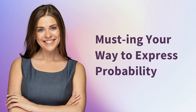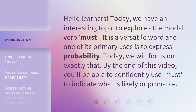Must — in your way to express probability. Hello learners. Today, we have an interesting topic to explore: the modal verb 'must'. It is a versatile word and one of its primary uses is to express probability. Today, we will focus on exactly that. By the end of this video, you'll be able to confidently use 'must' to indicate what is likely or probable.